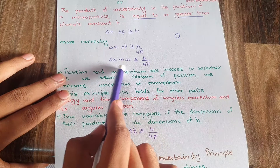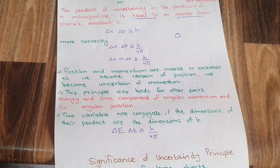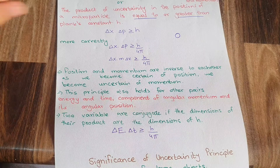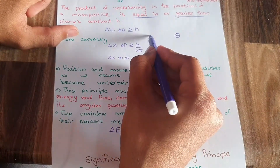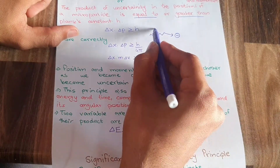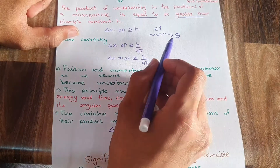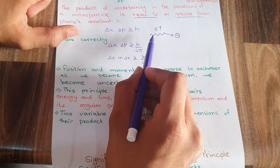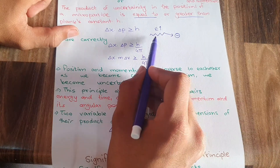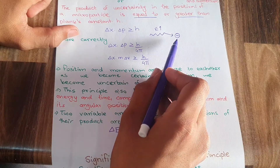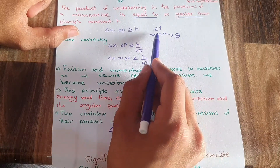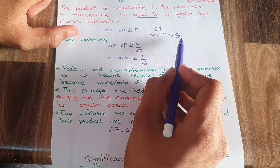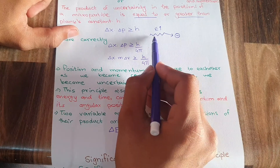Delta P is equal to m times Delta v. Now, why can the position and momentum of an electron — of a micro-particle — not be found simultaneously? If I want to find the position of the electron, I will have to use a wave with higher energy because the electron is very small, so I will have to use a wave with shorter wavelength. Shorter wavelength means more energy, so when a wave strikes the electron with more energy, the momentum of the particle is disturbed, but we can find the position.